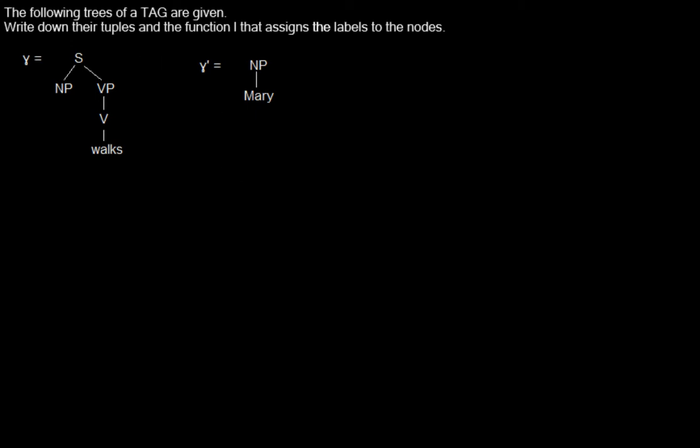Here we have the following trees of a tree adjoining grammar given. We are asked to write down the tuples and the function L that assigns the labels to the nodes. These are the two trees we have here. They are called Gamma and Gamma bar.